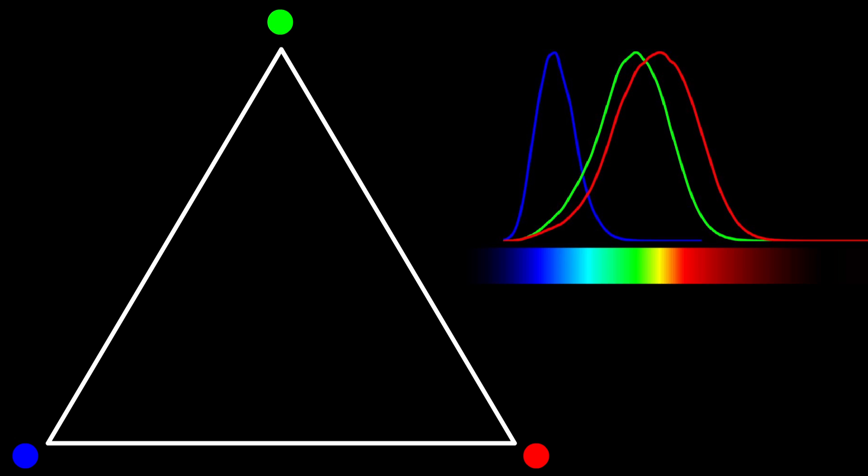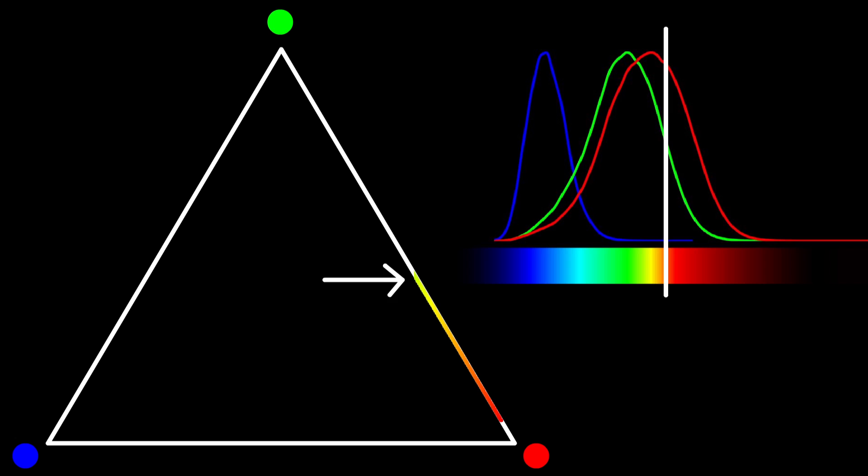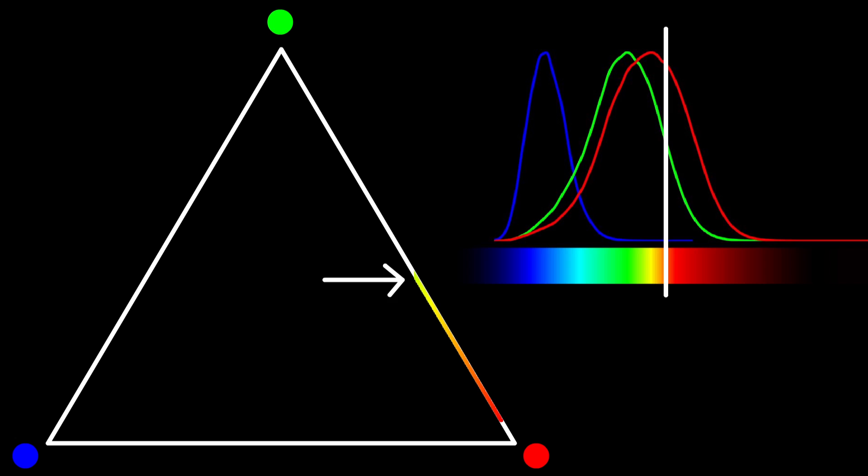Let's start with the spectrum we saw earlier. Red reacts the strongest at lower frequencies. Green slowly takes more and more of the total stimulus as we move to higher frequencies. Then blue takes over at the highest ones. This is how your eyes react to all monochromatic colors.